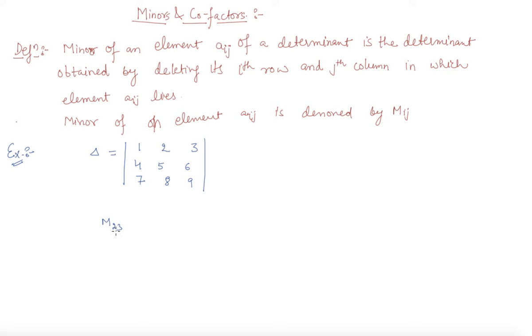The element in second row and third column is six. The definition states that the minor of an element a_ij is the determinant obtained by deleting its i-th row and j-th column.